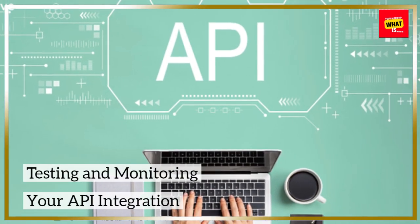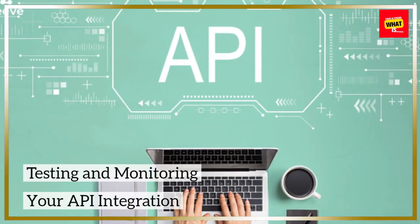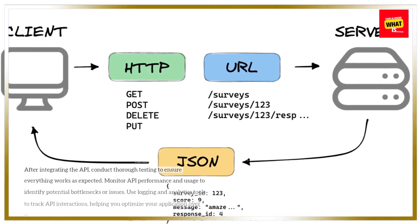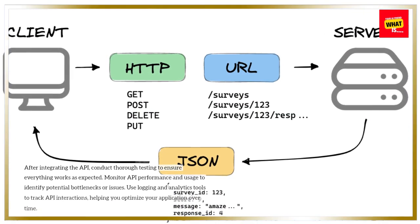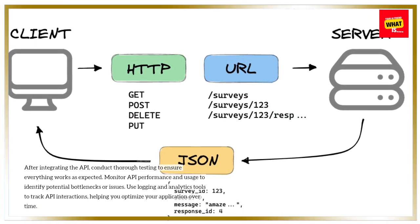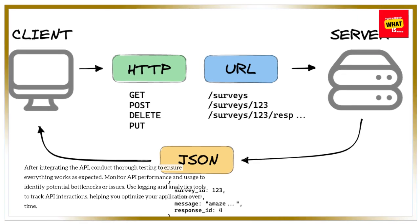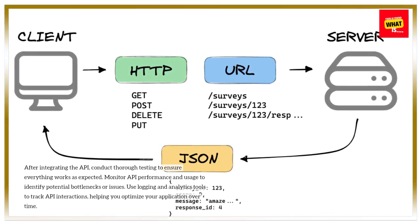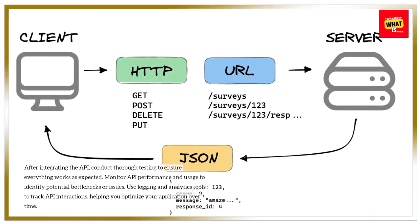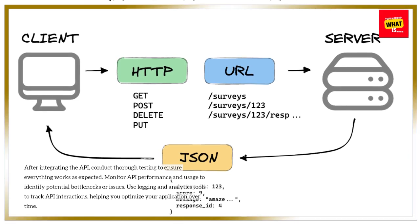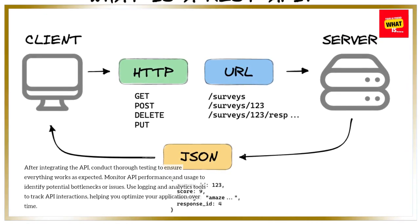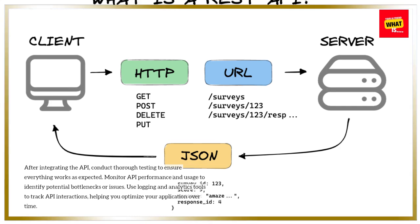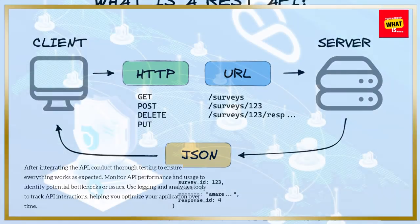Testing and monitoring your API integration. After integrating the API, conduct thorough testing to ensure everything works as expected. Monitor API performance and usage to identify potential bottlenecks or issues. Use logging and analytics tools to track API interactions, helping you optimize your application over time.